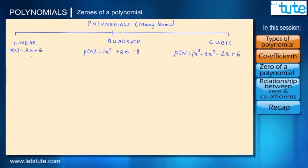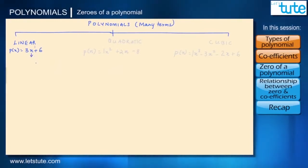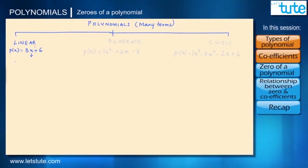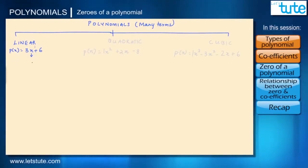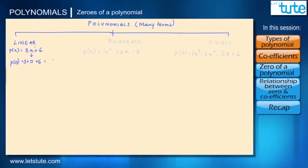Now let's look at this linear polynomial. Everything here seems pretty sorted except for this value of x — we don't know what the value of x is. So I am going to substitute some random numbers in place of x to see how this polynomial is actually affected. Let's say x is equal to 0; then p(0) = 3 × 0 + 6, which is equal to 6.